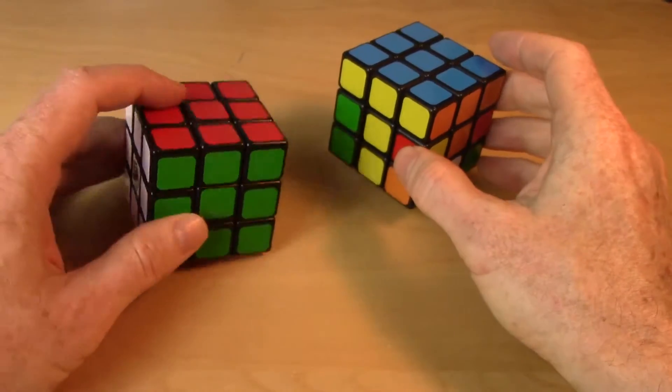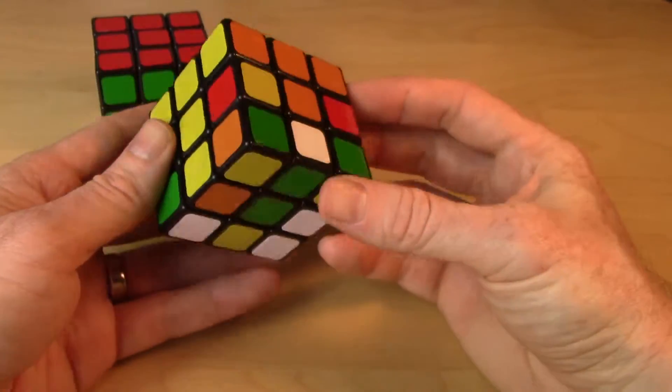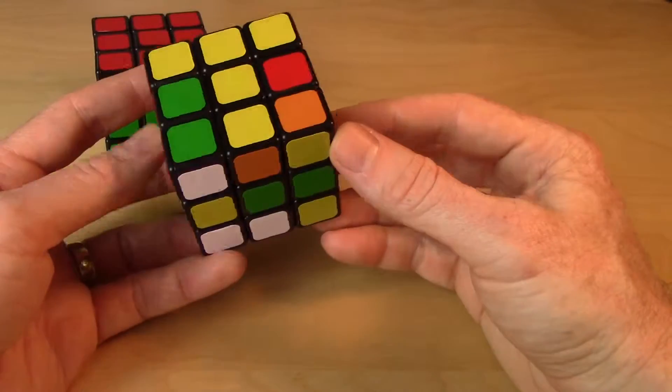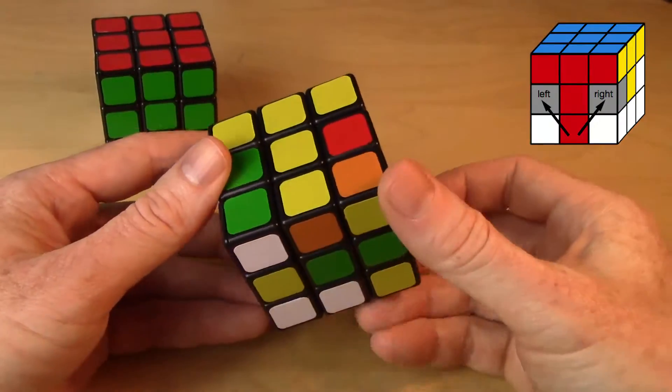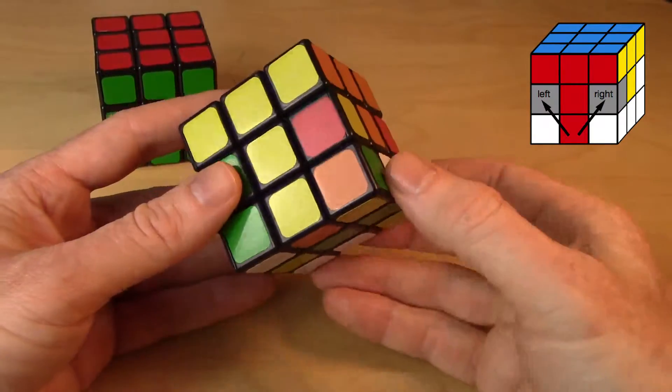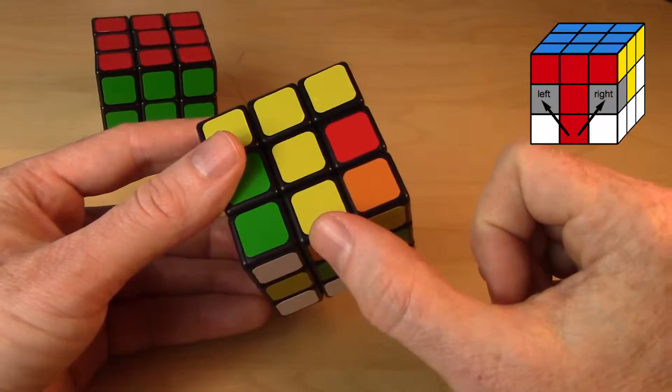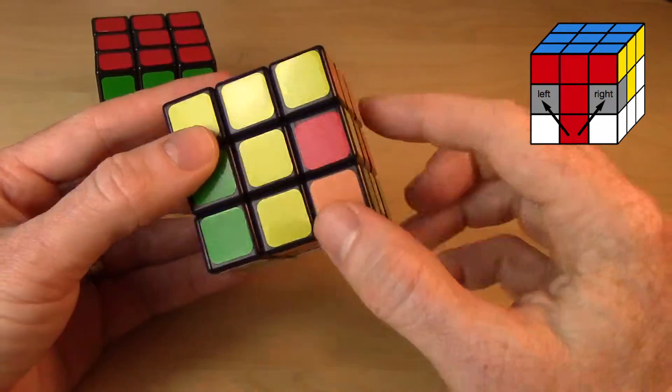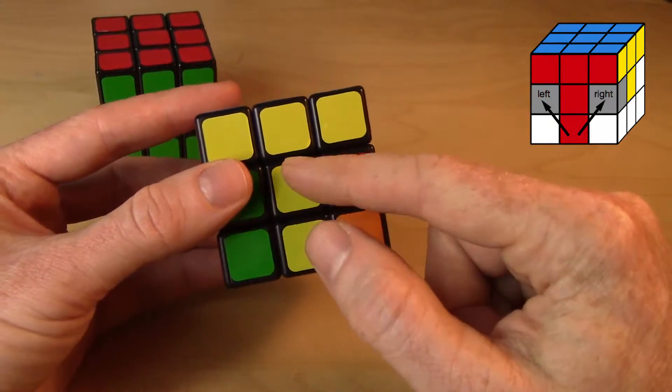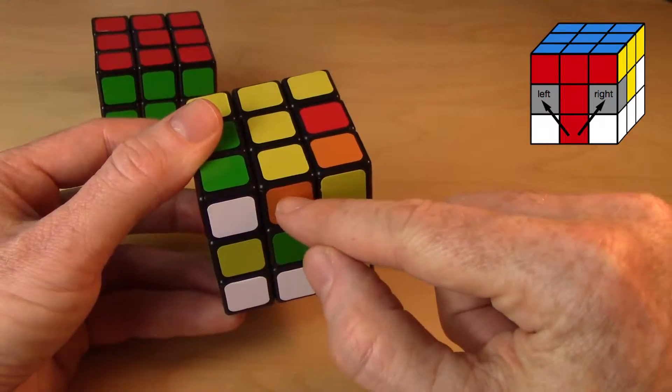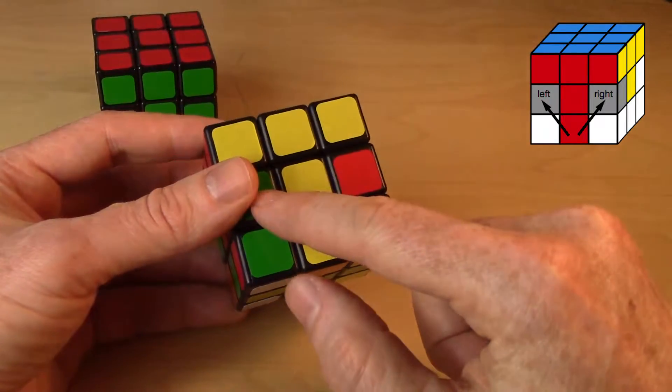Now if we think about the middle layer, the method we used for solving this middle layer was this double Z commutator, where we took the piece that we needed to move up to the middle layer, we lined the colors up with the center, and then we just decided, do I need to send that to the right or to the left?